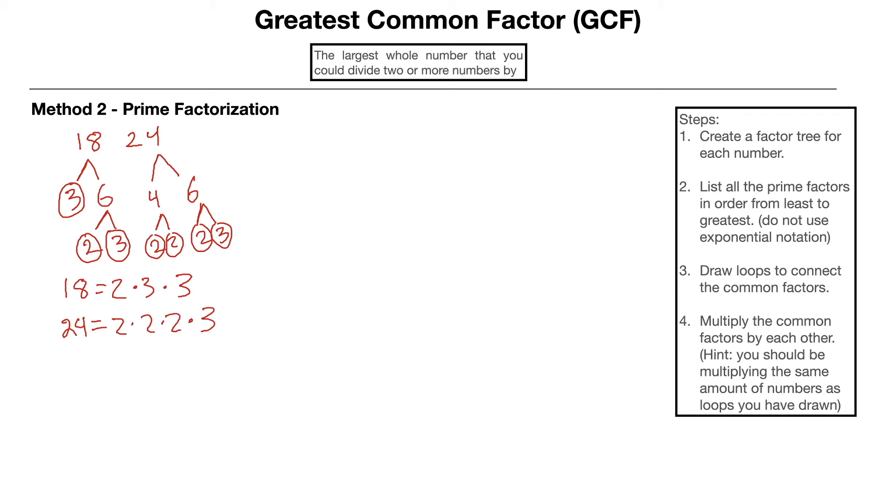Then I'm going to move on to my next step right over here. It says draw loops to connect the common factors. So I'm going to see they both have a 2. They both have at least 1, 3. And then the other numbers they do not have in common. This goes on to then step number four, multiply the common factors by each other. A hint, you should be multiplying the same amount of numbers as loops you've drawn. We've drawn two green loops here, which means we're multiplying two numbers. So we're going to multiply a 2 times a 3. That's what they have in common. 6 is our answer. So that means the GCF equals 6.